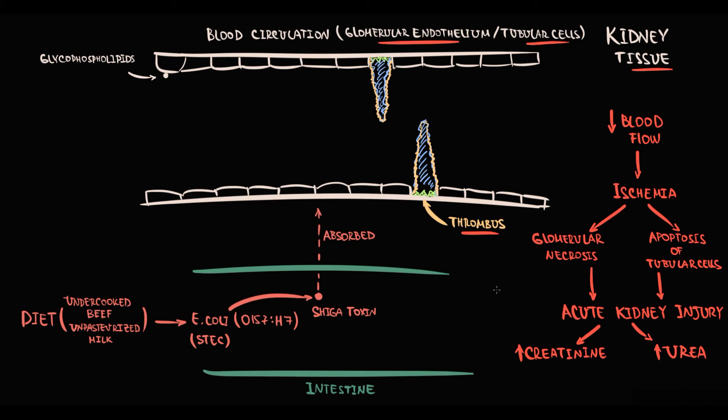Another problem is if thrombus causes significant obturation of the blood vessel, it will be very difficult for erythrocytes to squeeze through this site of obstruction. Basically, this thrombus cleaves red blood cells in two, and these damaged red blood cells are called schistocytes.